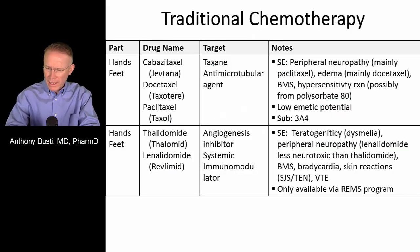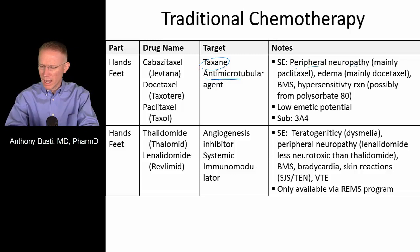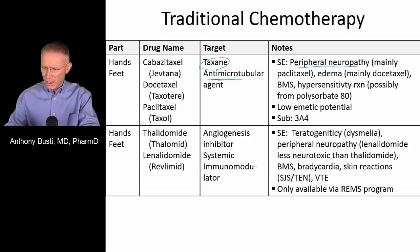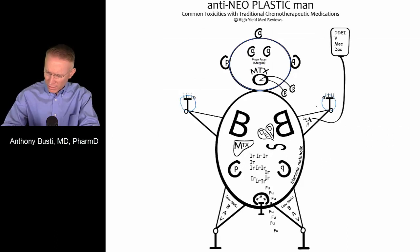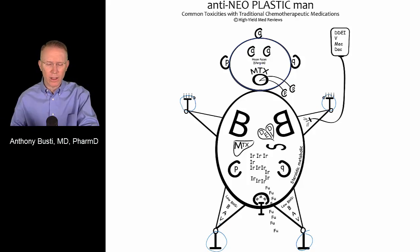Moving on to the taxanes — paclitaxel and docetaxel are classic agents in this group. They work on microtubules, and as with other microtubule-targeting drugs, they cause peripheral neuropathy in patients. The letter T on the extremities of antineoplastic man reflects these drugs and their associated peripheral neuropathy.